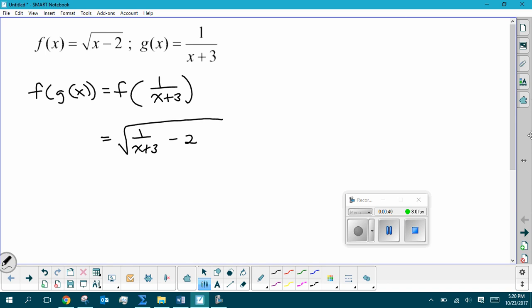I want to talk about how we find these domains. First thing, remember, is to look at the domain or see if there's any restrictions for the inside function. So the inside function here is that. So we know that that restriction, x cannot be negative 3 because that would get a division by 0. So we need to make sure that that's part of our answer for our domain.